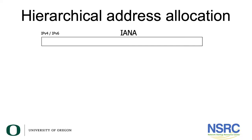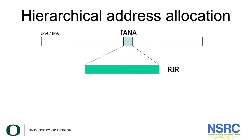In this section, we're going to be discussing hierarchical address allocation. This is basically how IP addresses are allocated. The entire IPv4 and IPv6 address space is managed globally by IANA, which stands for Internet Assigned Numbers Authority, and by five regional internet registries.